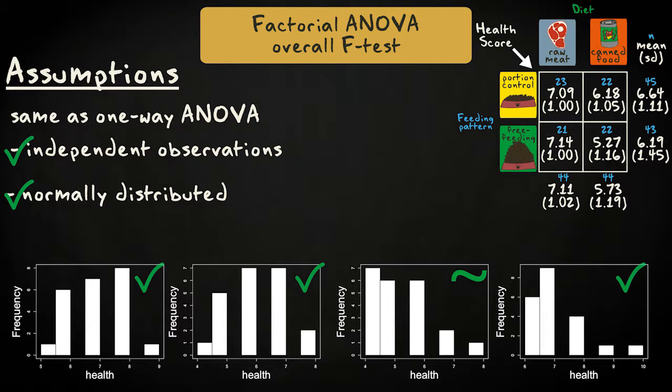Second, the response variable should be normally distributed in each group. The histograms in our example look fairly normal. Analysis of variance is robust against moderate violation of normality, and our samples are large enough with at least 10 observations in each group, so we don't have to consider using a nonparametric test.